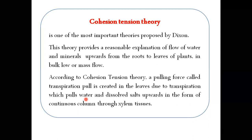So to summarize: cohesion tension theory is proposed by Dixon and it is the most reasonable explanation of flow of water and minerals upward from the roots toward the leaves in bulk flow. According to cohesion tension theory, a pulling force called transpiration pull is created in the leaves due to transpiration, which pulls water and dissolved salts upward in the form of a continuous column through the xylem tissues.